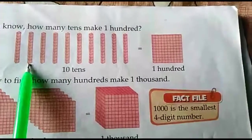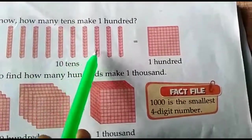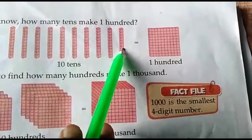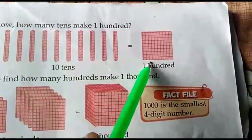One, two, three, four, five, six, seven, eight, nine, ten. So, ten tens make one hundred.